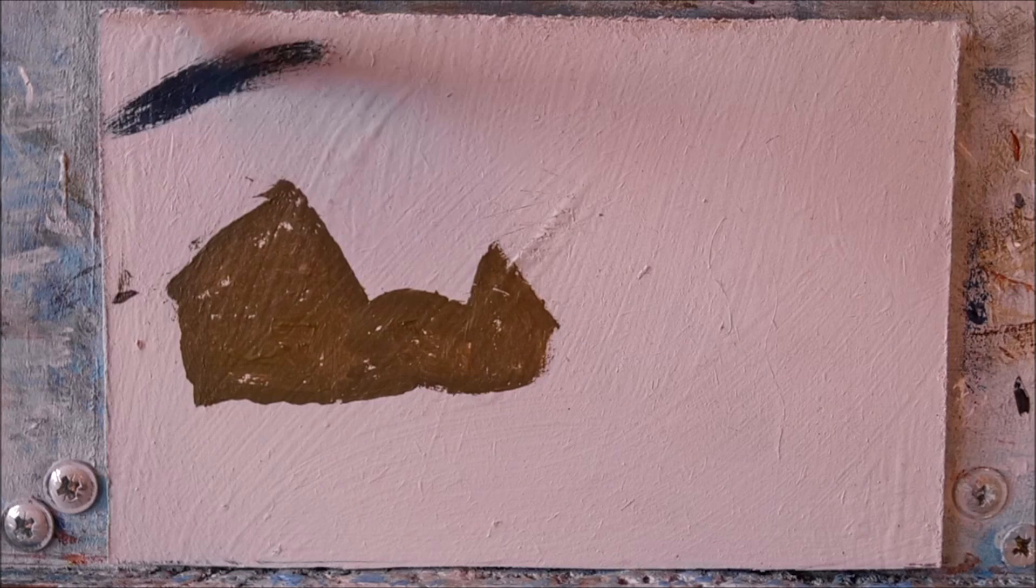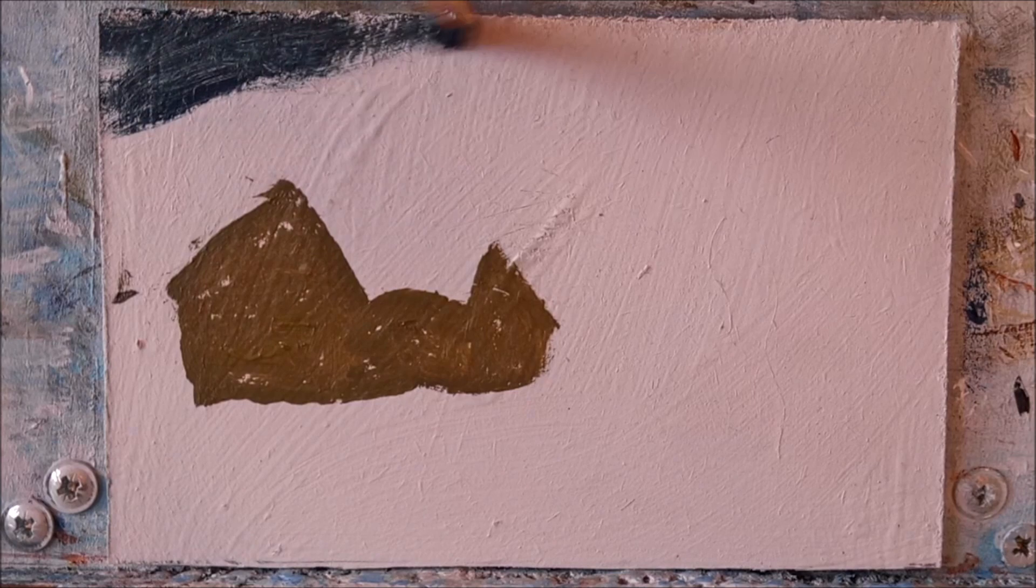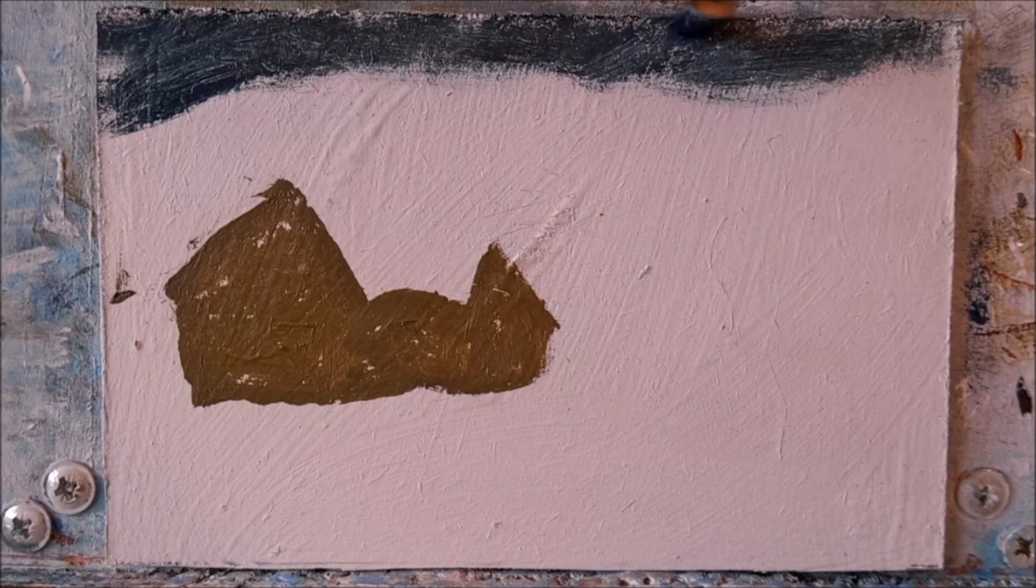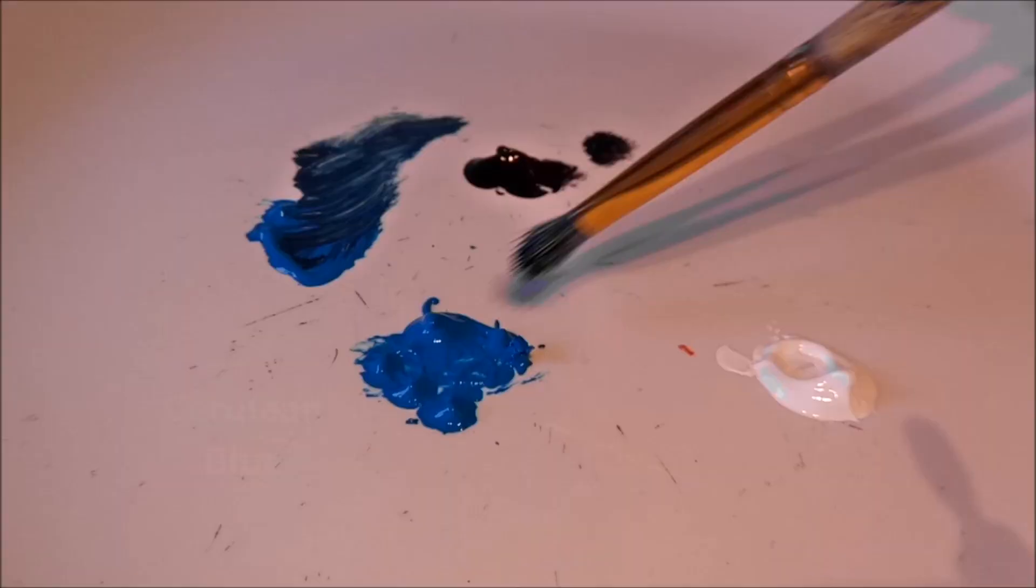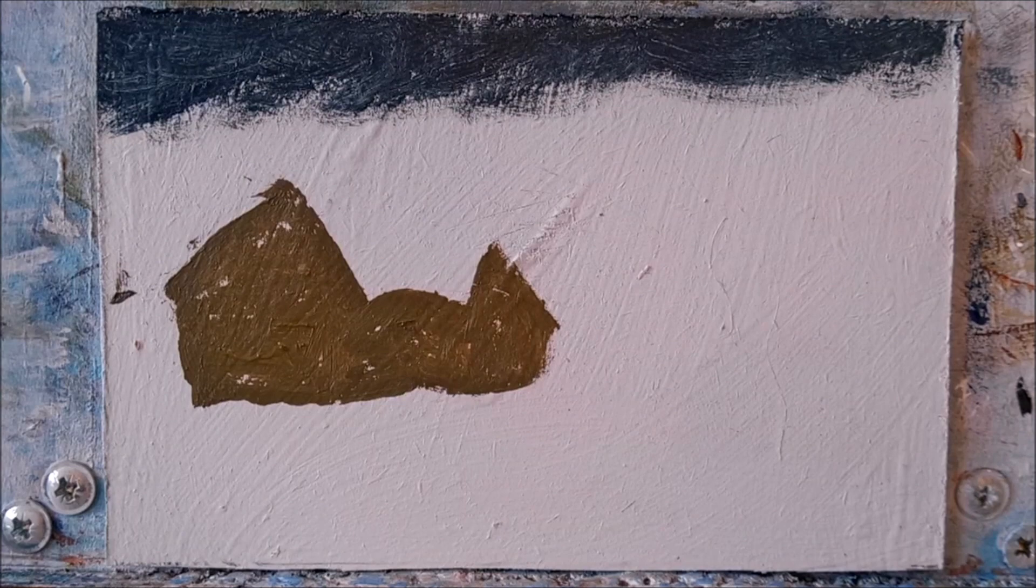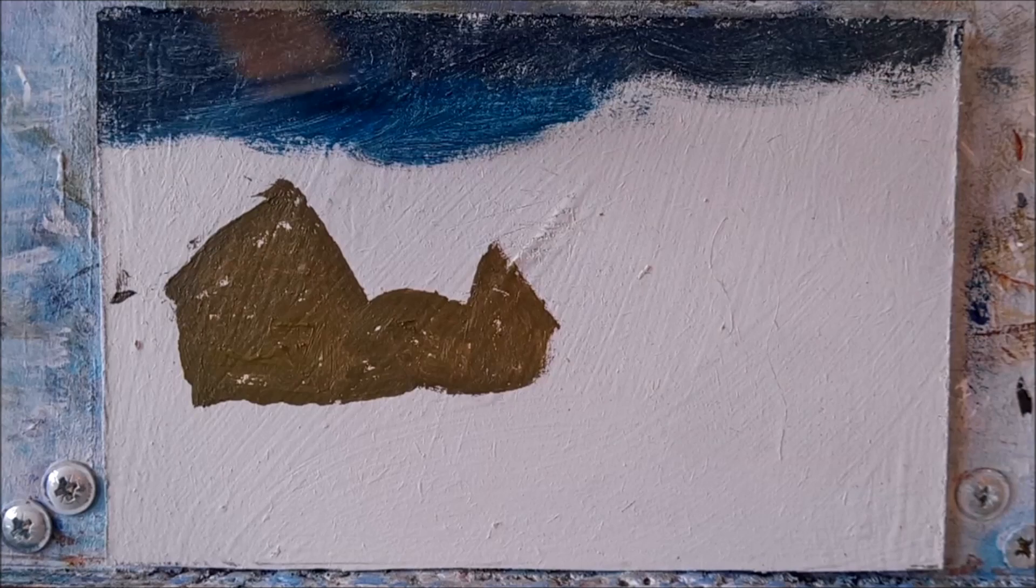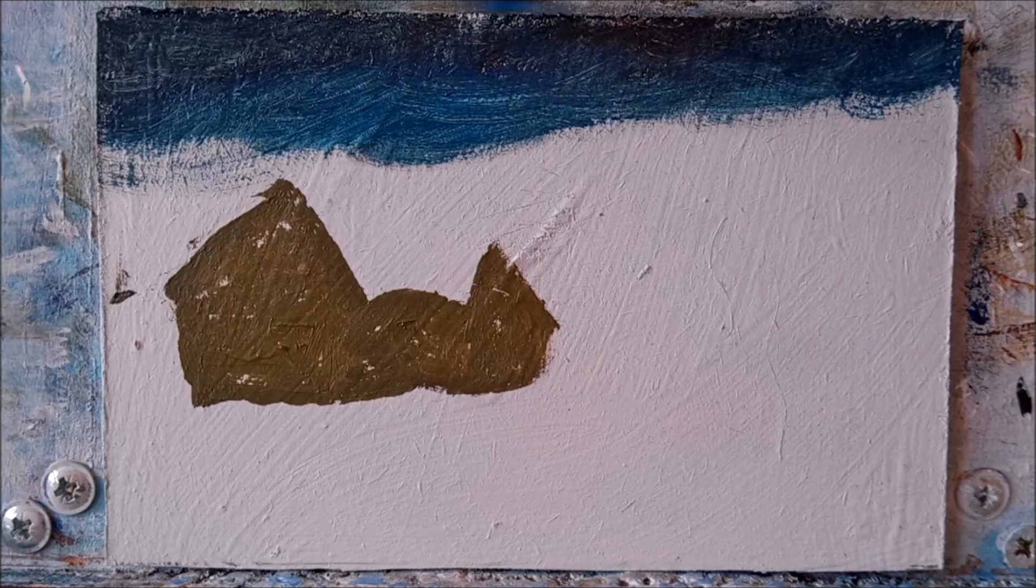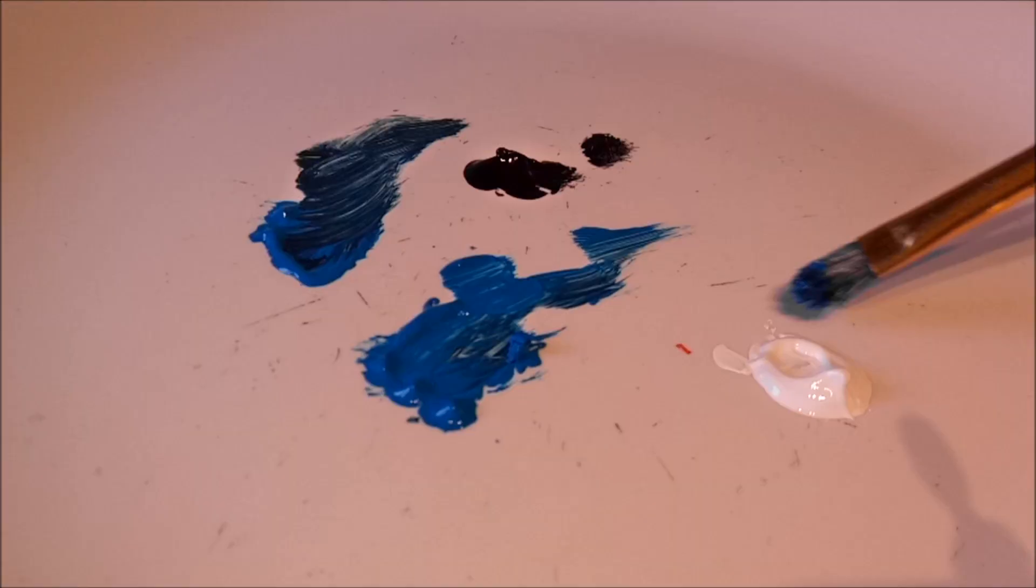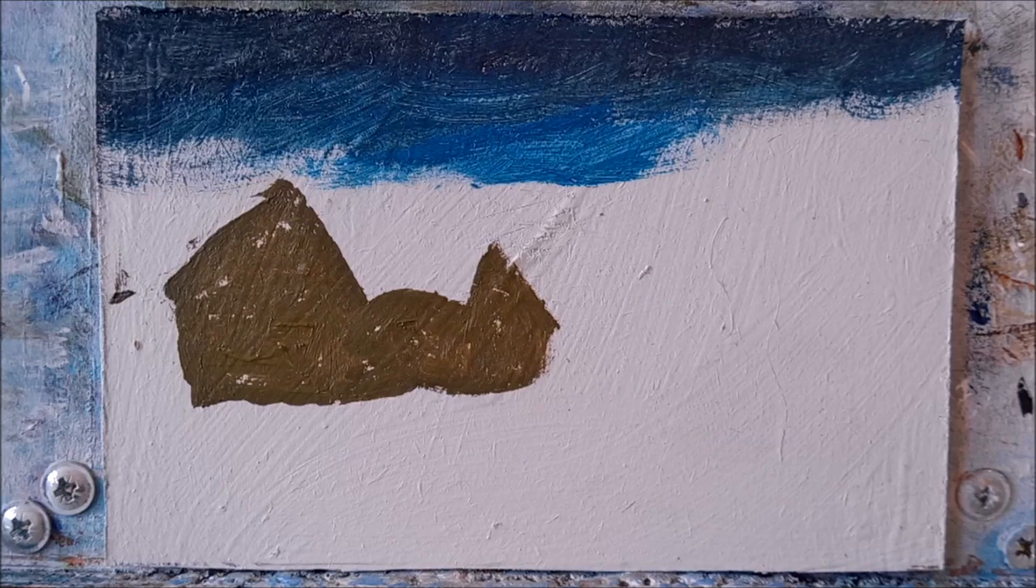Okay, now grab some cerulean blue and I want to blend this in with the dark color while it's still damp. Adding a little white to the mix now and continue on down.